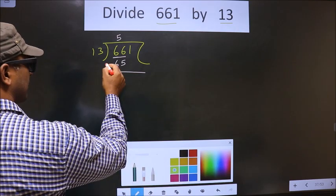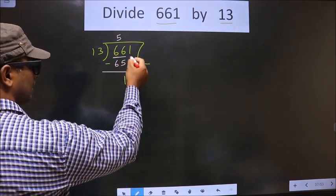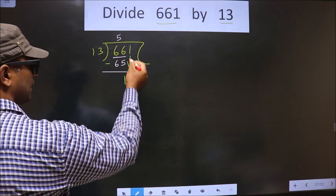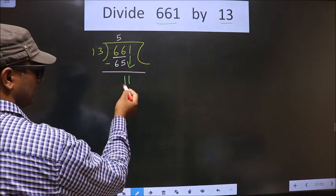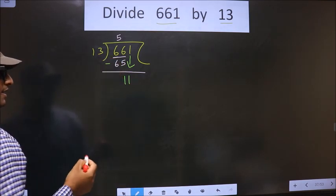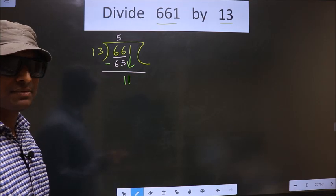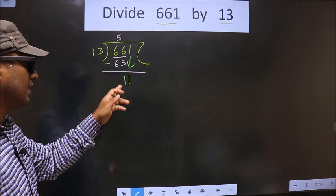Now we should subtract: 66 minus 65 is 1. Now you bring the beside number down. Now here we have 11. 11 is smaller than 13. This is where the mistake happens. And what is the mistake? See, here 11 is smaller than 13.